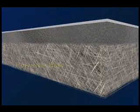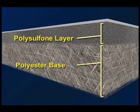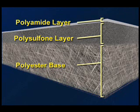We begin the process with a fabric support base and then coat it with a microporous polysulfone layer. This provides additional support for the top 0.2 micron thick membrane barrier layer.